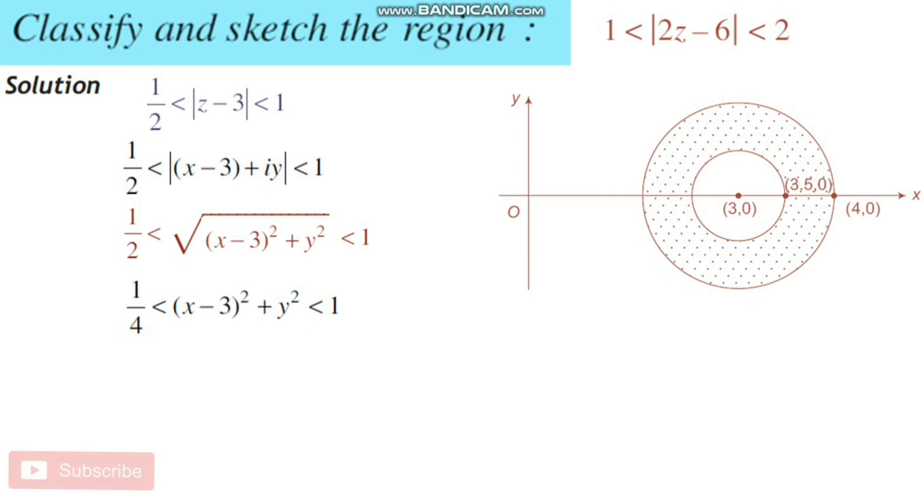The center is at (3, 0) and radius 1/2. We have obtained this inner circle. Later, with same center and radius 1, we can prescribe this outer circle.